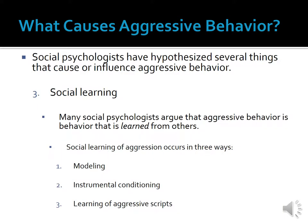The third factor is social learning. Many social psychologists argue that aggressive behavior is basically learned from others. Just as people learn that two plus two equals four, how to cook an egg, and what to do on a first date, people also learn when and how to act aggressively by observing and interacting with others. According to social psychologists, social learning of aggression occurs in three ways: modeling, instrumental conditioning, and the learning of aggressive scripts.